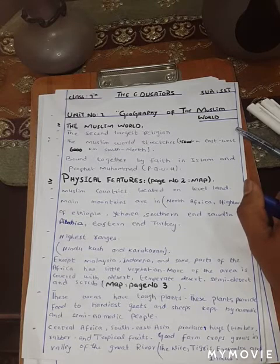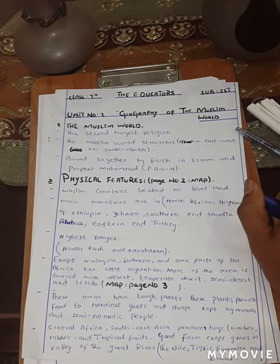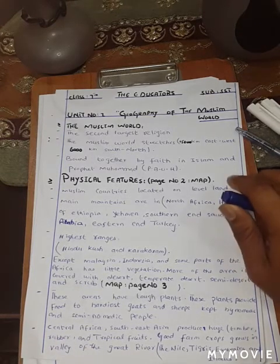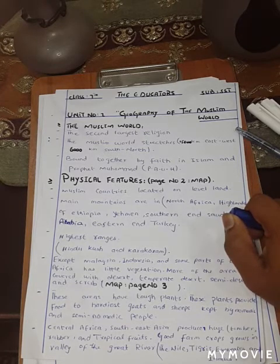Except Malaysia and Indonesia, some parts of Africa have little vegetation. More of the other area is covered with desert, temperate desert, semi-desert and scrub. On page number three, in the upper right corner, you will see a map that shows you the natural vegetation of the Muslim countries.